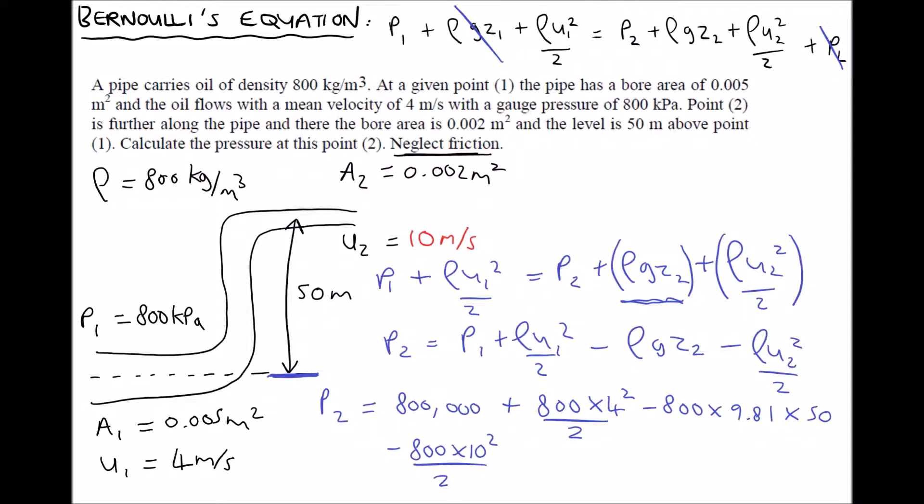So note that we're subtracting rho GZ2 and we're subtracting rho U2 squared over 2. Now running that all through the calculator gives us a pressure at position 2 equal to 374,000 or expressed in kilopascals 374 kilopascals.